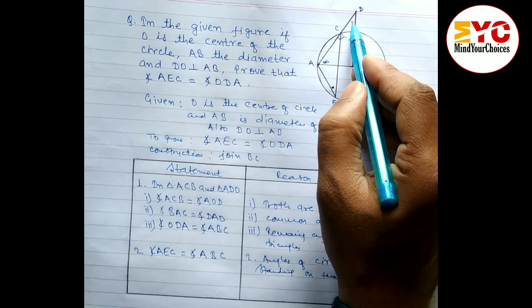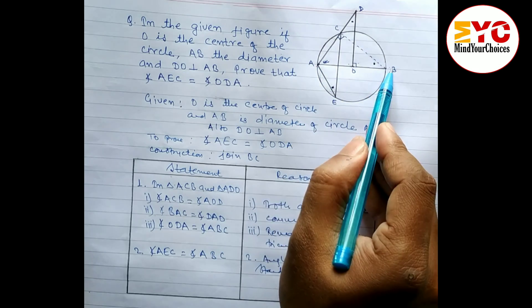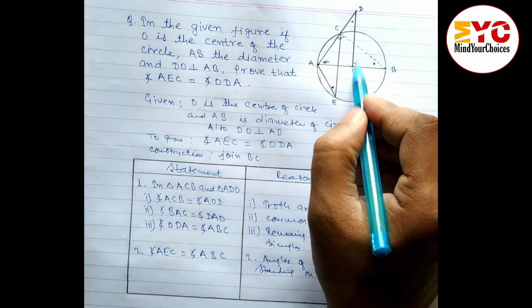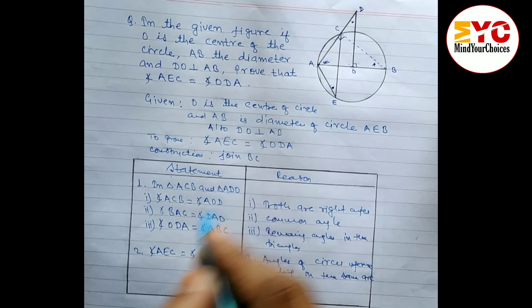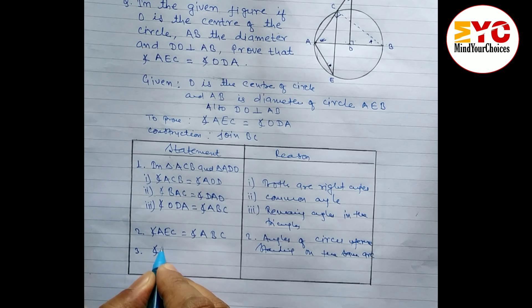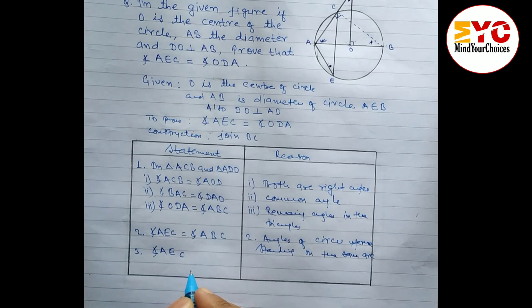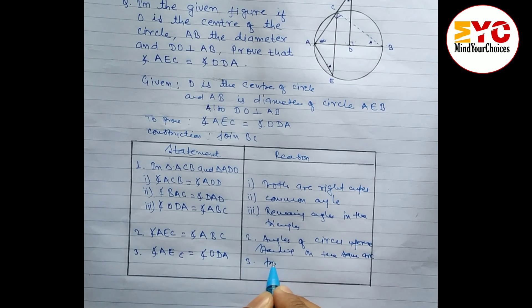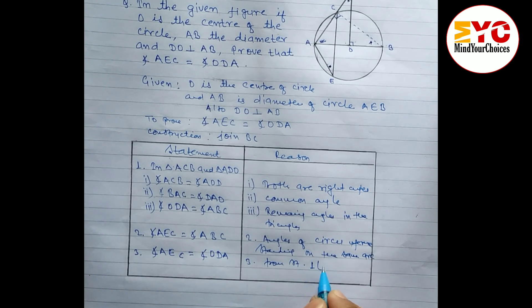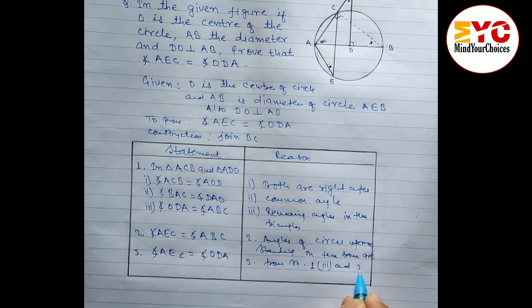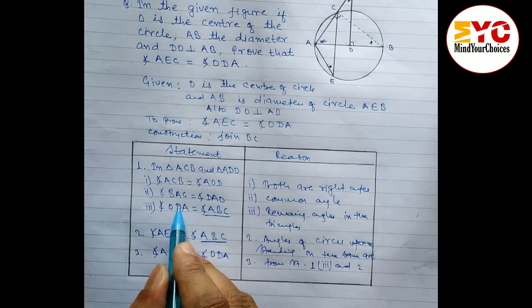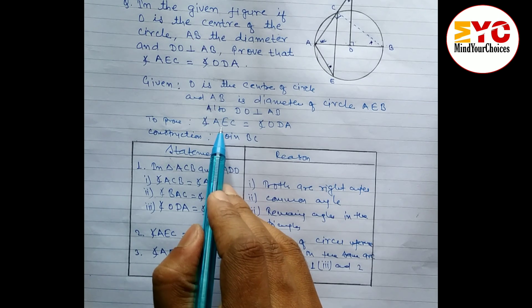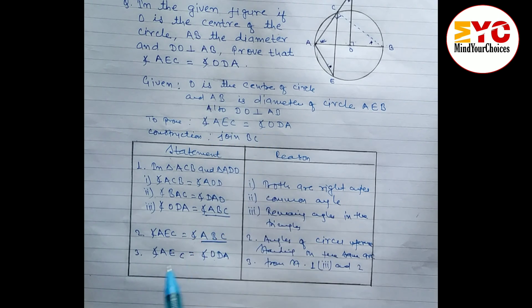We know angle ABC equals angle ODA from statement 3, and angle AEC equals angle ABC from the inscribed angle theorem. Therefore, angle AEC equals angle ODA — which is what we had to prove. Hence proved. If you understand, please hit the like button.